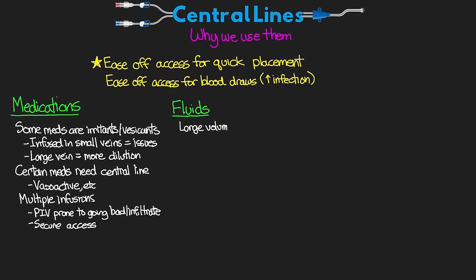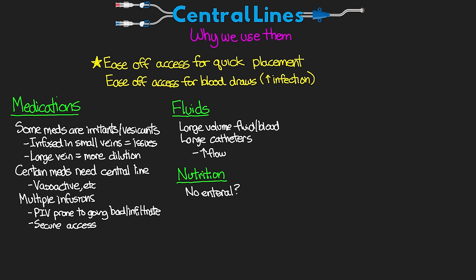The next category of indication is fluids. For patients receiving large volumes of fluid or blood, we can use large catheters that allow for rapid flow, such as when we need to use a massive transfuser. Another category is nutrition. If our patient is unable to tolerate or for some reason can't be given enteral nutrition, we can give nutrition via IV. TPN is what we give when we're giving nutrition via a central line, although we generally do try to avoid TPN at all costs — but sometimes it's a necessity.